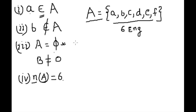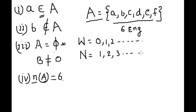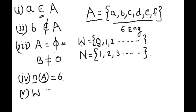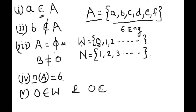Part (e): '0 is a whole number but not a natural number'. We know that whole numbers start from 0, 1, 2, and so on, but natural numbers start from 1, 2, 3, and so on. So we can say 0 ∈ W (0 is an element of whole numbers) and 0 ∉ N (0 is not an element of natural numbers), because 0 is not available in the natural number set.